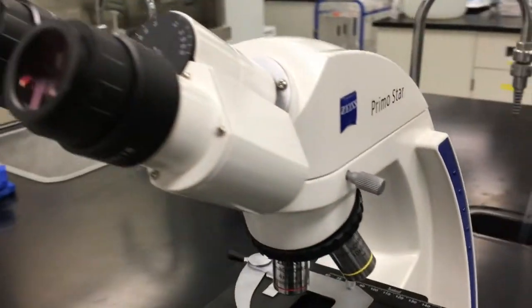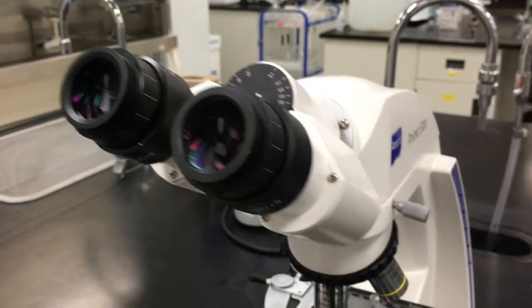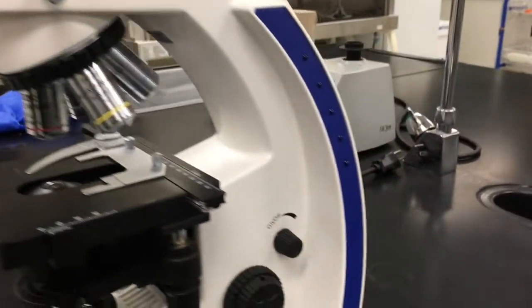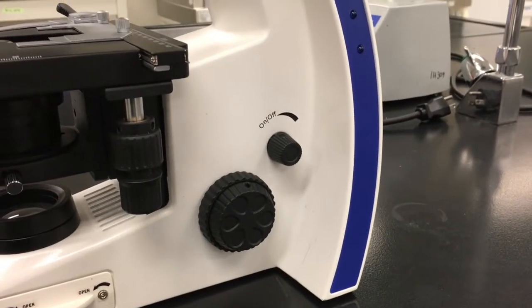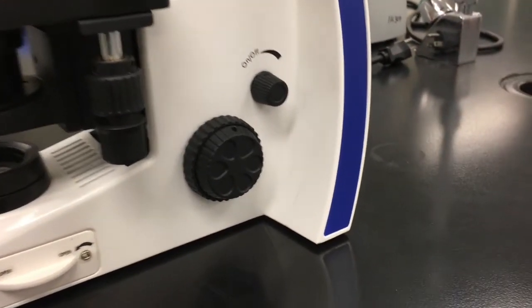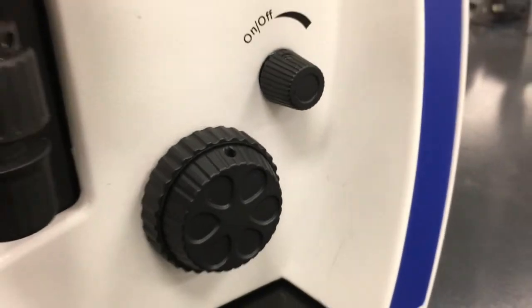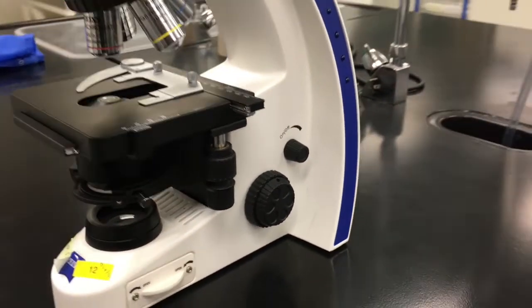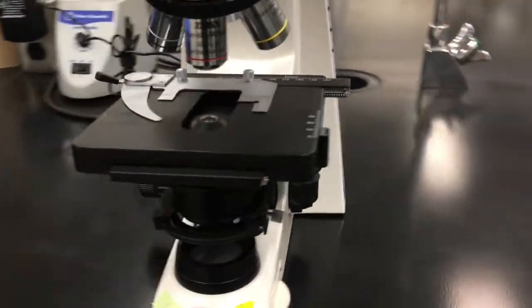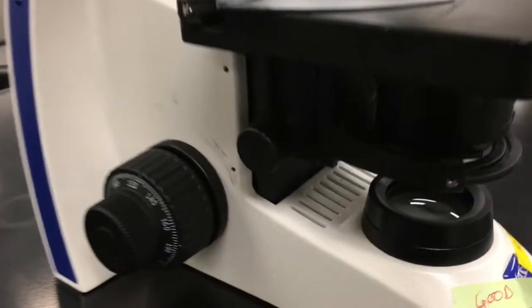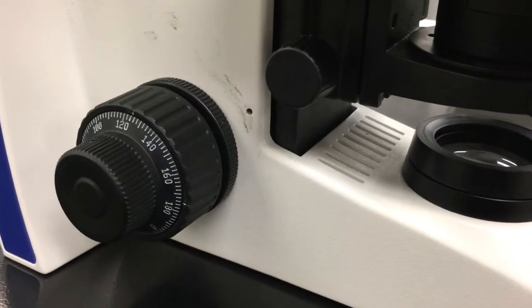In order to bring specimens into focus, you need to locate the coarse adjustment and fine adjustment knobs on your microscope, which are seen here. The innermost knob is the coarse adjustment knob, the outermost is the fine adjustment knob. More difficult to see on this side, but if you look to the other side of your microscope, this becomes more apparent. So the larger part is the coarse adjustment, the outermost part is the fine adjustment.